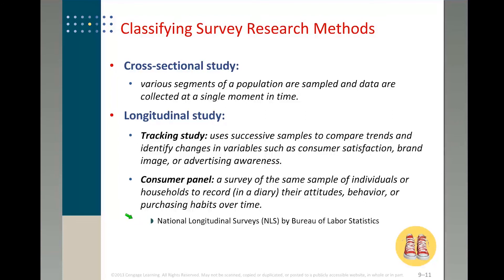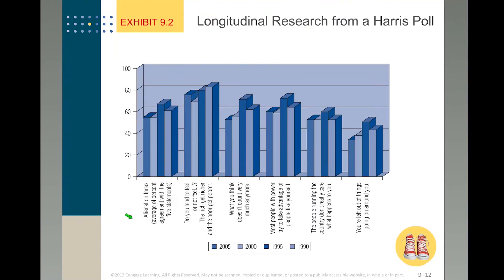A very useful resource in social science and business is the National Longitudinal Surveys by the Bureau of Labor Statistics. They actually track the same group of people over years, asking about almost everything in their lives — attitudes, behavior, purchase habits — over time. The database even includes questions about drug use, so it's a very comprehensive database. This last page shows a Harris poll over time from 1990 to 2005 with different survey questions.